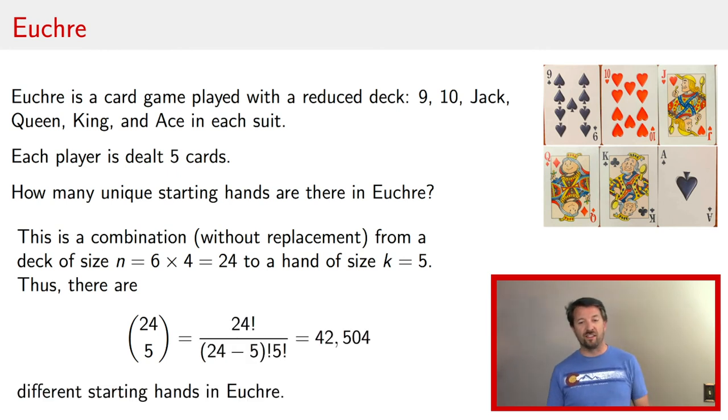And if you do the calculation, you'll find that there are about 43,000 different starting hands in the game of Euchre.